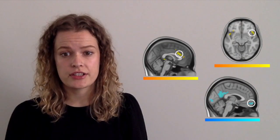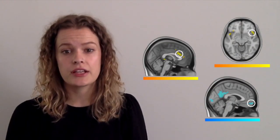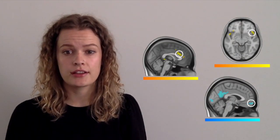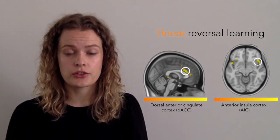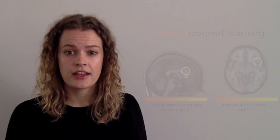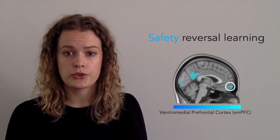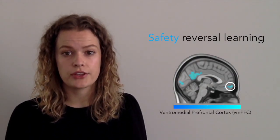I've used this paradigm in two experiments during my PhD. The first study investigated whether healthy young people were able to do this task and which brain regions were involved. We found three brain regions seem to be particularly important: the dorsal anterior cingulate cortex and anterior insular cortex during threat reversal learning, and the ventromedial prefrontal cortex during safety reversal learning.